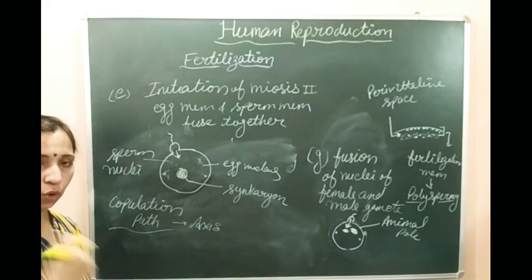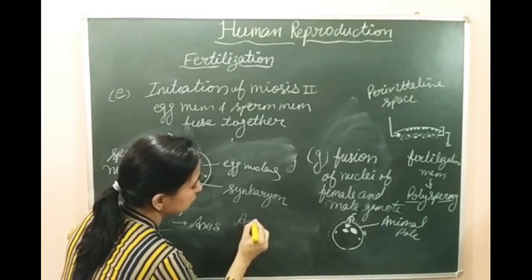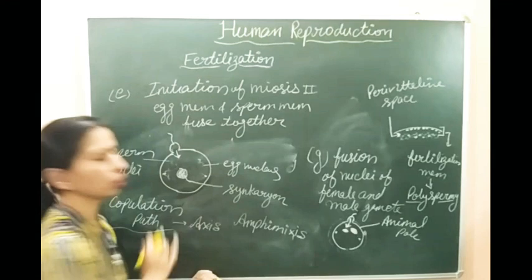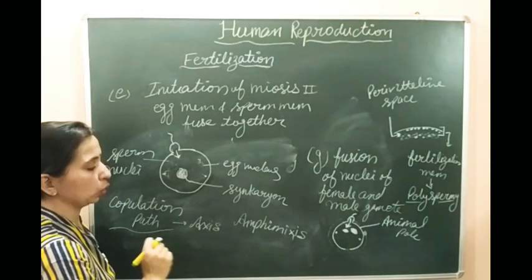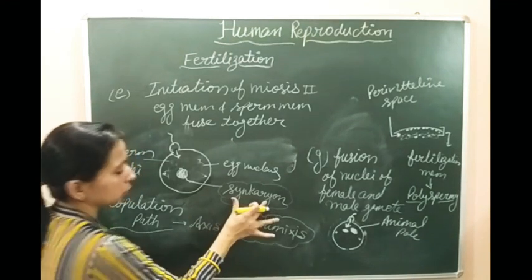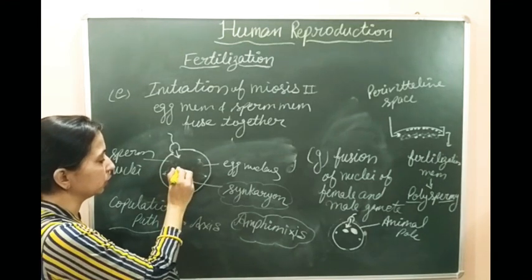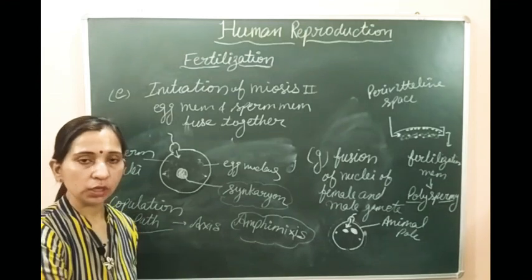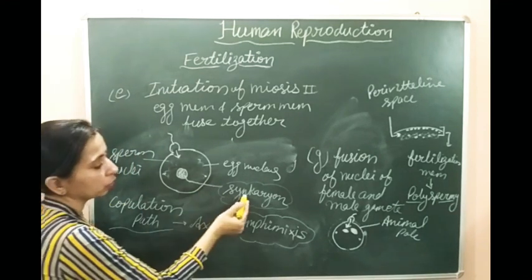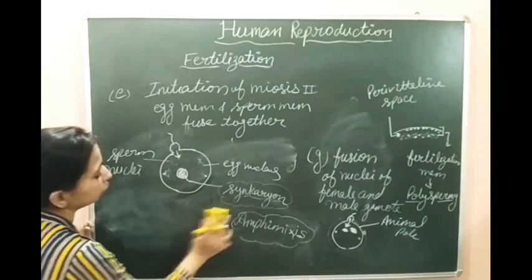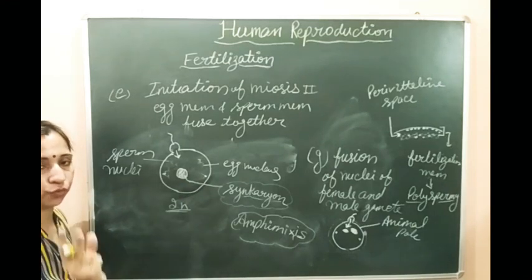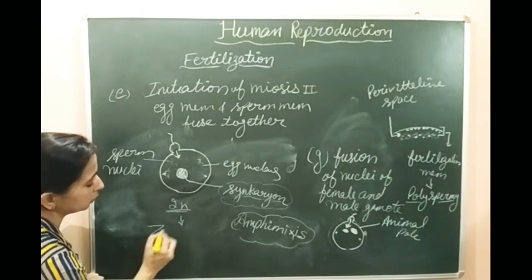The common mixing of chromosomes of male nuclei with female nuclei is a process known as amphimixis. In amphimixis, the chromosomes of the male nuclei join with those of the female nuclei. The structure formed is known as the synkaryon, which has two sets of chromosomes - half coming from the father and half from the mother. This synkaryon then becomes a diploid structure because it has two sets of chromosomes, with 46 chromosomes in total.